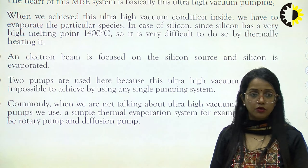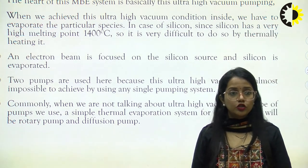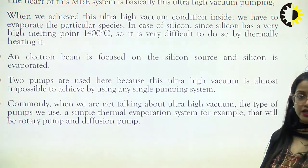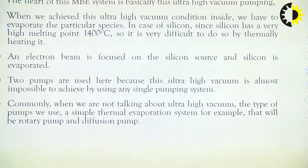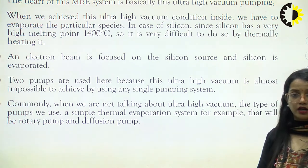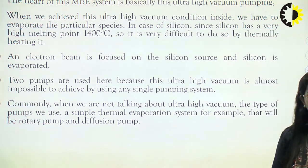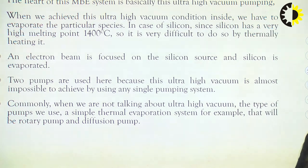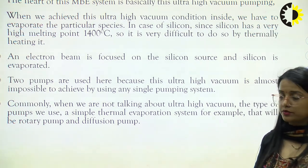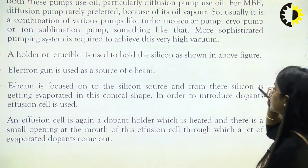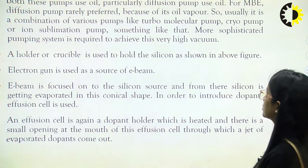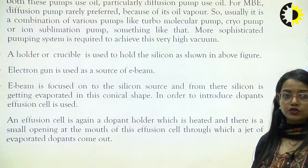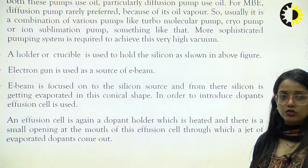So we take the help of the electron beam instead. Two pumps are used because ultra high vacuum is almost impossible to achieve using any single pumping system. Commonly, for non-UHV processes, the type of pumps used is a simple thermal evaporation system — for example, a rotary pump and a diffusion pump. Both these pumps use oil; particularly, the diffusion pump uses oil.